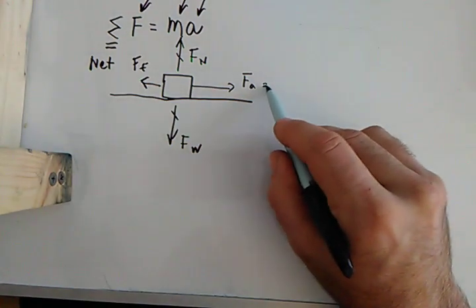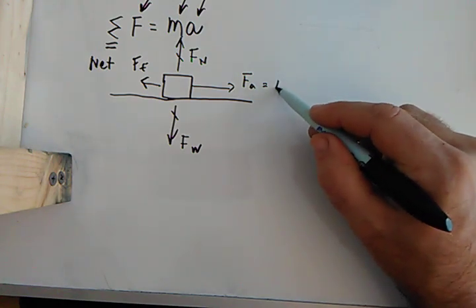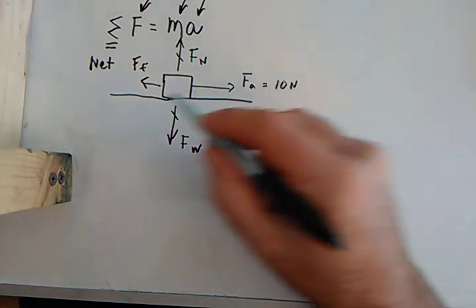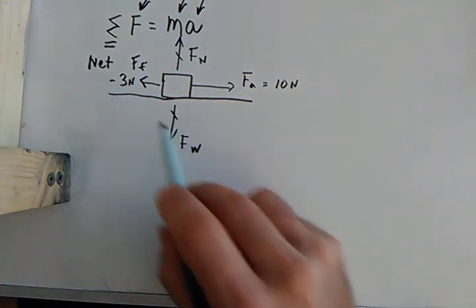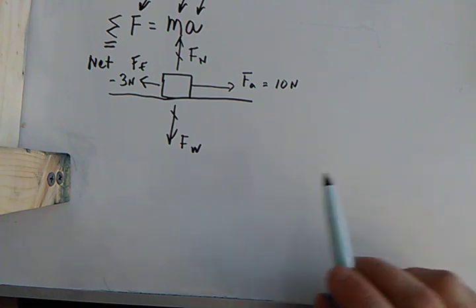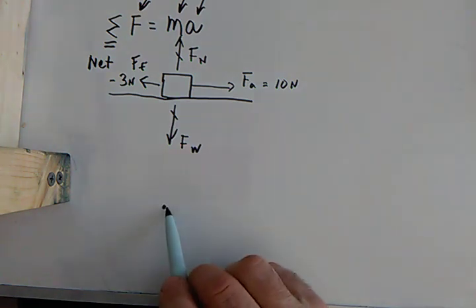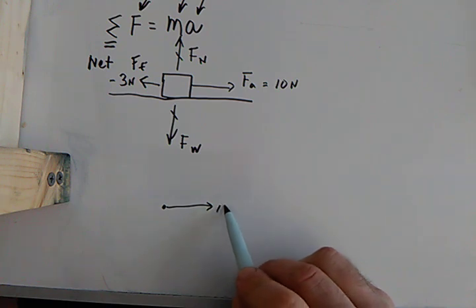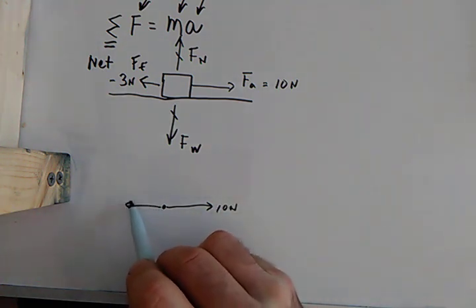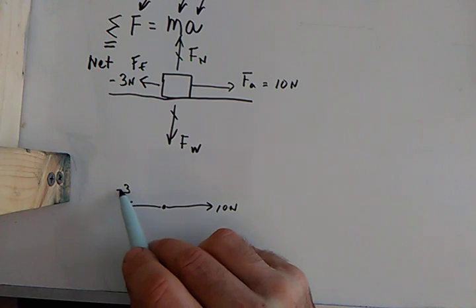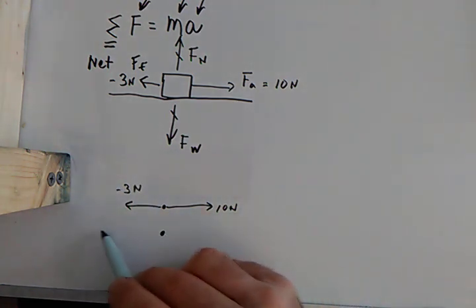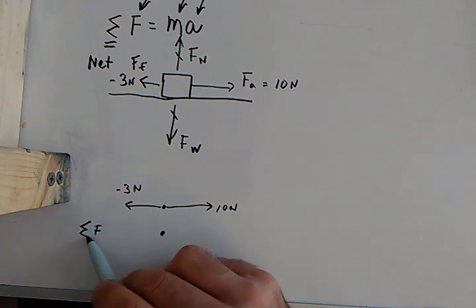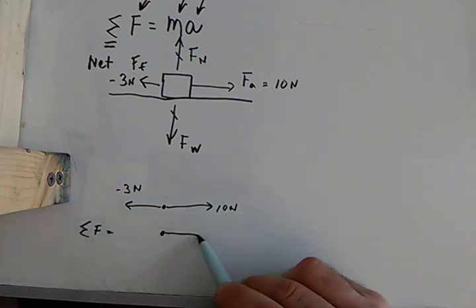So let's just put a number on here and say that we have a 10 Newton force to the right and a 3 Newton force to the left. We'll call that negative. If I were to draw a free body diagram of that, all I would have would be a 10 Newton and then a 3 Newton. So my overall net force would be 7 Newtons to the right.